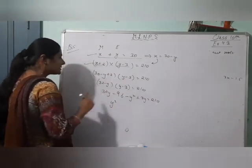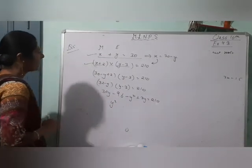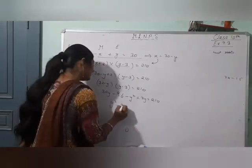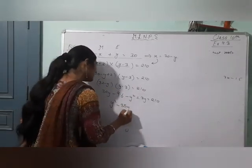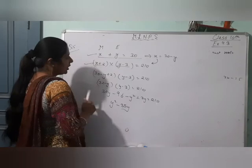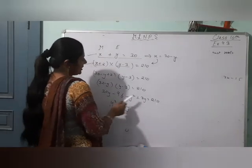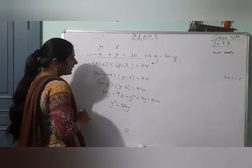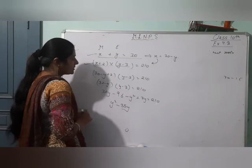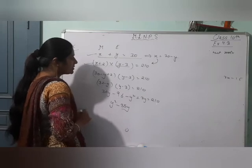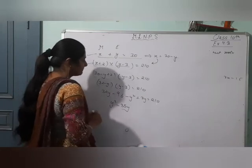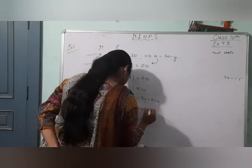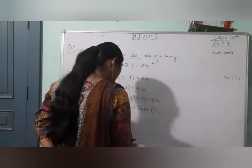Expanding: minus y square plus 3y plus 32y minus 96 equals 210. Ek taraf leke aate hain: y square minus 35y plus 96 plus 210 equals 0. So y square minus 35y plus 306 equals 0.